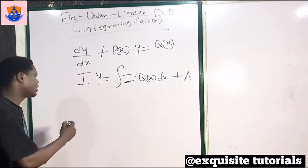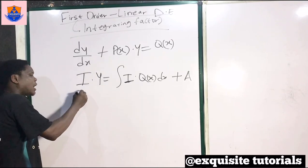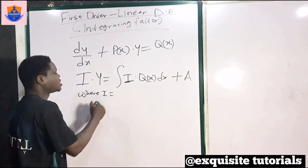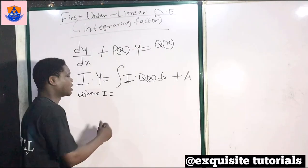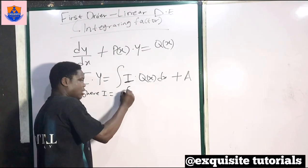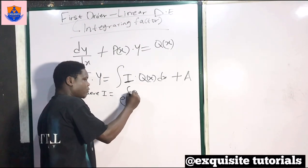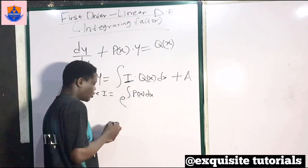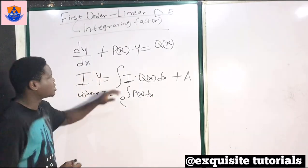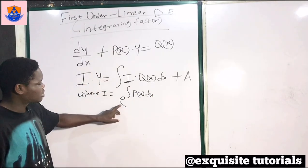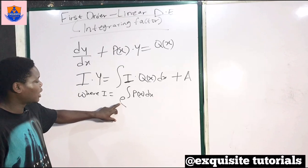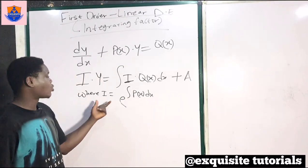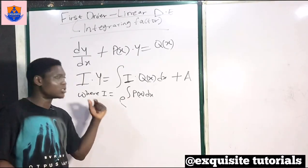The question is: what is this i? Where i is the integrating factor, and it is given as e raised to the power of the integral of p of x dx. When you integrate p of x and raise e to that result, that is what we call our integrating factor.